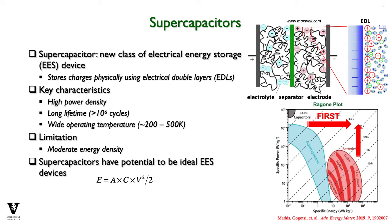Supercapacitors have long lifetimes — they can be cycled millions of times, while batteries are typically limited to about a thousand times due to degradation of the electrode. Since supercapacitors do not react chemically with the electrode, it does not degrade them. Supercapacitors also have a much wider operating temperature than batteries. All of these characteristics are the result of the energy storage mechanism being based on physical absorption of ions into electrodes, which is also the reason for the primary limitation: moderate energy density.